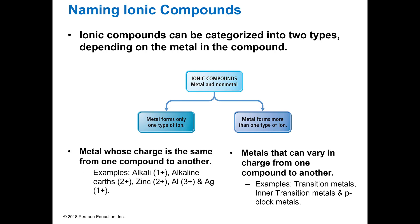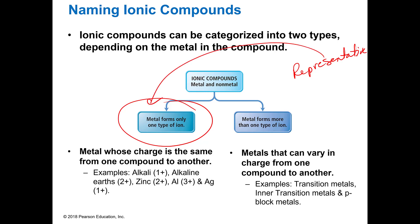When we name ionic compounds, in this course we're going to have what we call binary compounds — two things together, like we just saw. You have an ionic compound when it's between a metal and a non-metal. Elements in groups 1A, 2A, 5A, 6A, 7A are representative elements, meaning they follow the rules and only have one charge. Your alkali metals, alkaline earth metals, and some other metals will only have one charge.